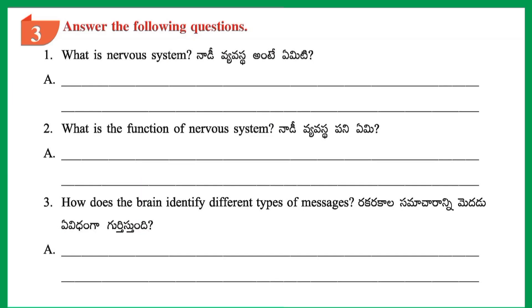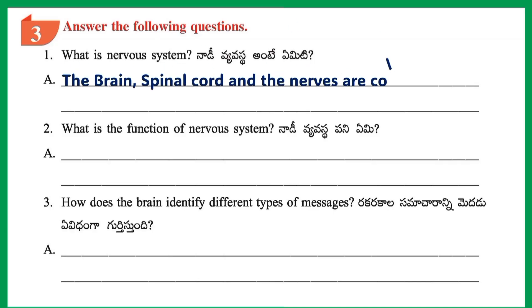Section 3: Answer the following questions. Question 1: What is the Nervous System? Answer: The Brain, Spinal Cord, and the Nerves are collectively connected and called the Nervous System.